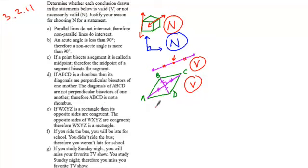Statement E says that if WXYZ is a rectangle, so again if we sketch what we have, and its opposite sides are congruent, so those sides are congruent, those sides are congruent, the opposite sides of WXYZ are congruent, therefore WXYZ is a rectangle.